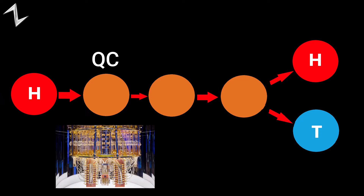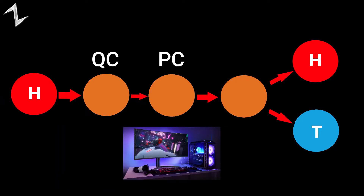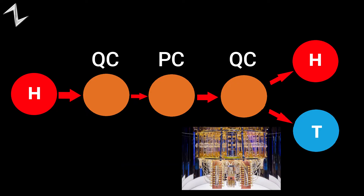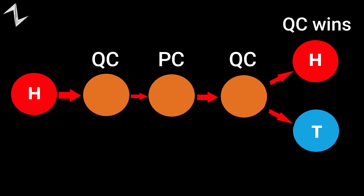The quantum computer can choose to flip the coin or not. My computer doesn't know what the decision was, and then my computer can choose to flip the coin or not based on a random module. The quantum computer doesn't know what my computer's decision was. Then again, the quantum computer can choose to flip the coin or not.